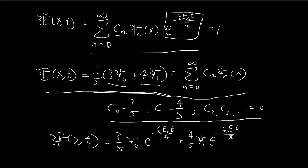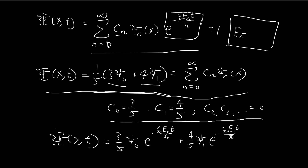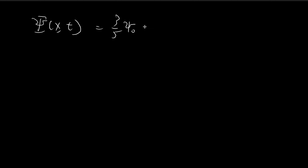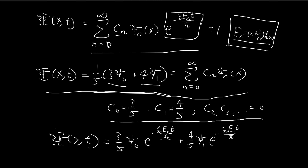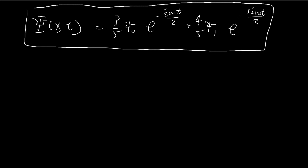We can simplify this further by applying the formula for the nth energy level: En = (n + 1/2) h-bar omega. For E0, substituting n=0, it's equal to 1/2 h-bar omega, so the first term becomes xi 0 times e to the power of negative i omega t divided by 2. For the second term, substituting n=1 gives E1 = 3/2 h-bar omega, so you get 4 over 5 times xi 1 times e to the power of negative 3i omega t divided by 2. This is the complete wave function with both x and t components.